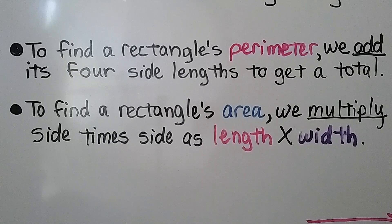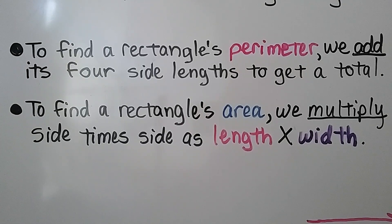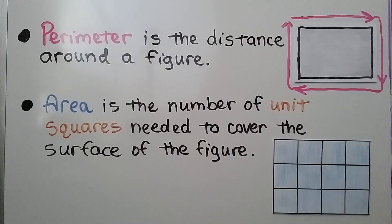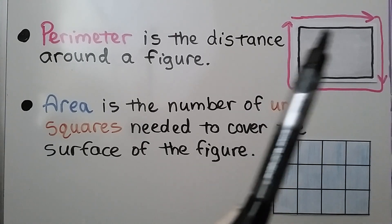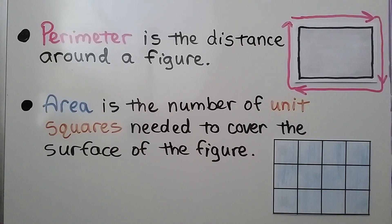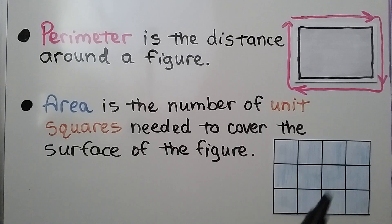To find a rectangle's perimeter, we add its four side lengths to get a total. To find a rectangle's area, we multiply side times side — length times width. Perimeter is the distance around a figure, so we measure going around the figure. Area is the number of unit squares needed to cover the surface of the figure.